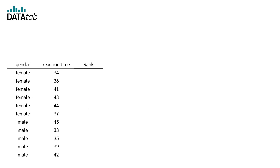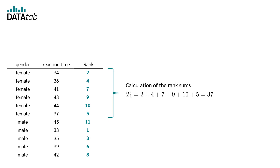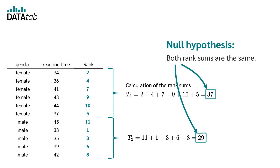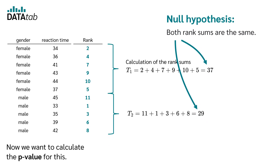First, we assign a rank to each value. We pick the smallest value, which is 33, giving it rank 1. The second smallest value is 34 and gets rank 2. The third smallest value is 35 and gets rank 3. We do the same for all other values. Once all ranks are assigned, we add up all the ranks from women and all the ranks from men. The rank sum T1 for female is 2 + 4 + 7 + 9 + 10 + 5 = 37. For male it is 11 + 1 + 3 + 6 + 8 = 29. Our null hypothesis is that both rank sums are equal.